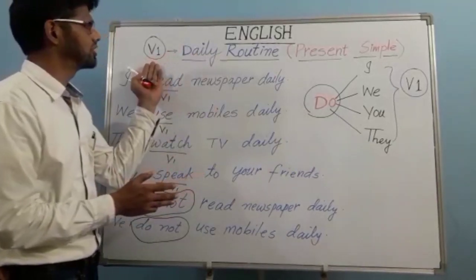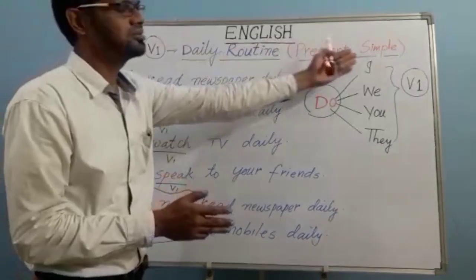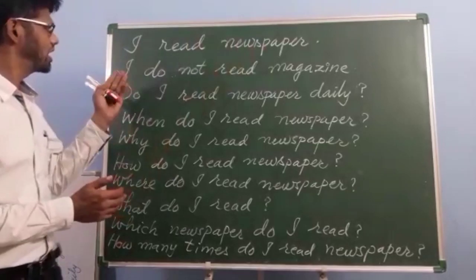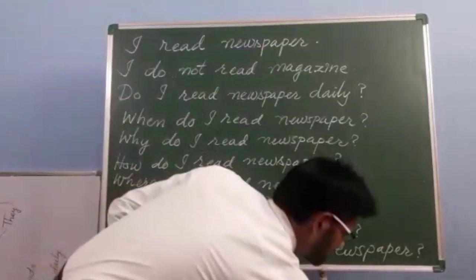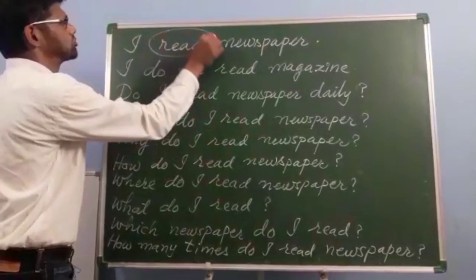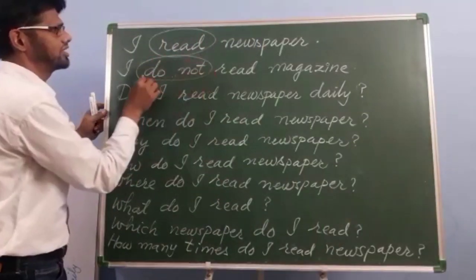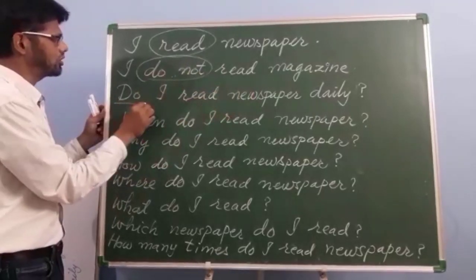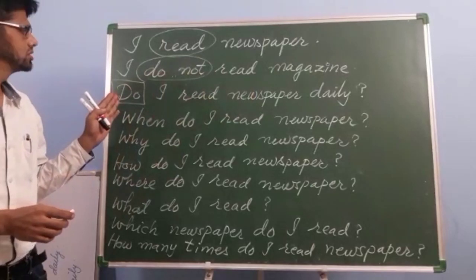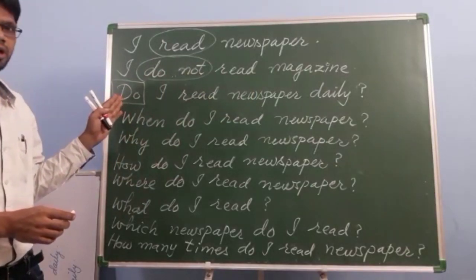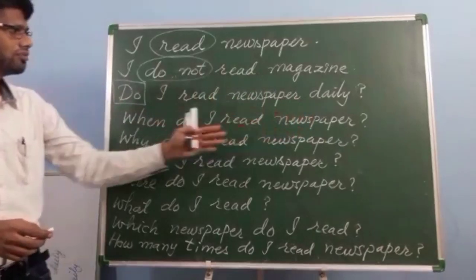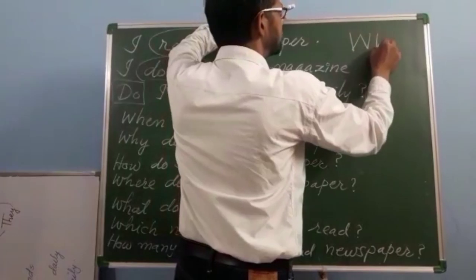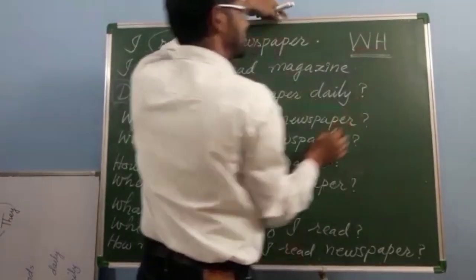This daily routine work with V1 form is also known as present simple. For example: I read newspaper (affirmative); I do not read newspaper (negative); Do I read newspaper daily? (question). We can also form WH questions to understand and practice more.